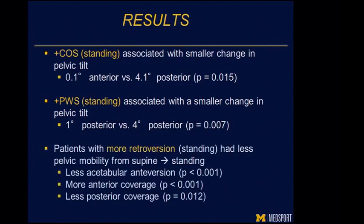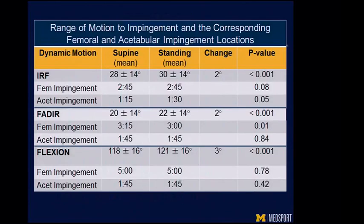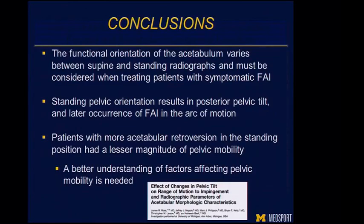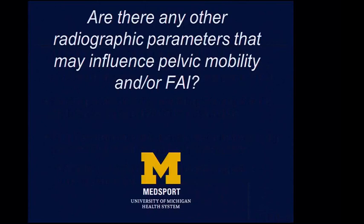Patients with more retroversion in standing had less pelvic mobility as they changed from supine to standing positions. Similarly, supine to standing positions also changes our occurrence of impingement as well as subtly our location. This led us to conclude that standing pelvic orientation results in posterior pelvic tilt, and that in some patients, acetabular retroversion that remains is due to less pelvic mobility. That begs the question: is this due to some other parameter?